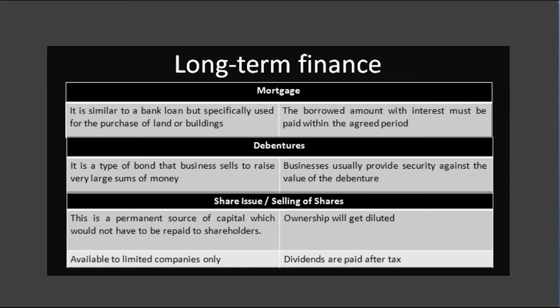The next long term finance is debentures. A debenture is a debt instrument used by large companies to borrow money at a fixed rate of interest. It is like a certificate of loan or a loan bond evidencing that the company is liable to pay a specified amount with interest. It is usual for a business to provide security against the value of the debenture so the holder is guaranteed to get their money back. For example, a business may provide the debenture holder the legal right to sell some of its land or buildings if it fails to repay the amount borrowed.